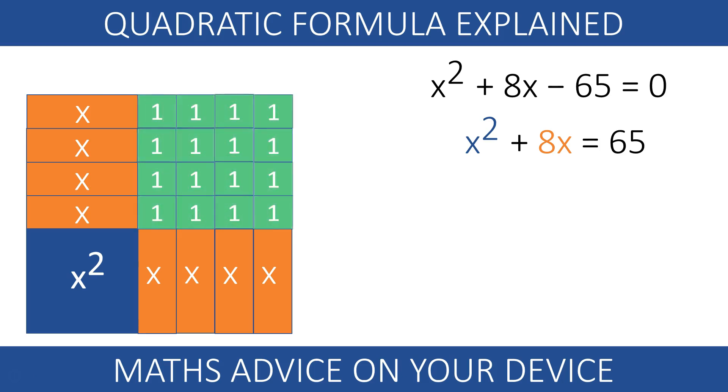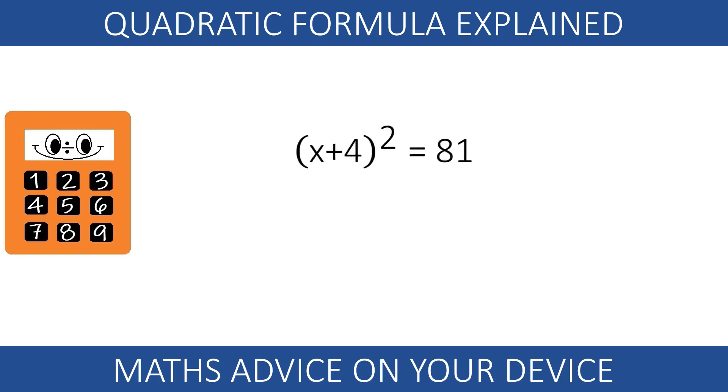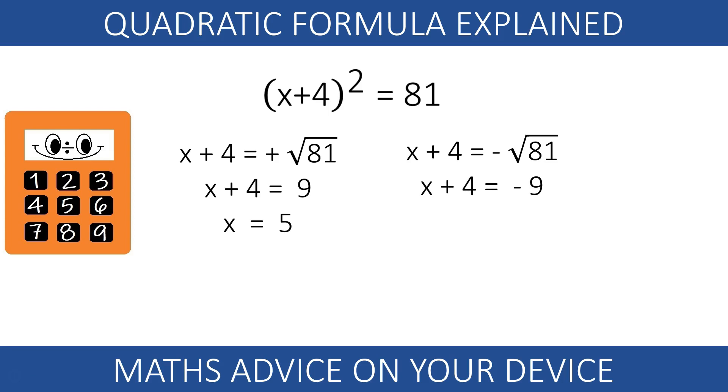To make it into a perfect square, we need 16 squares one by 1. This makes it into a perfect square with sides x plus 4. Taking both the positive and the negative square root of 81 leads into both solutions. x equals 5 and x equals negative 13.